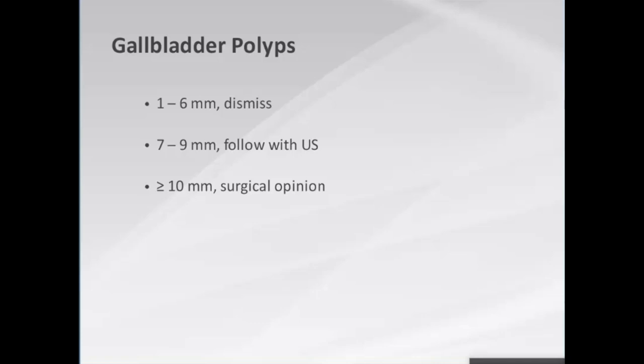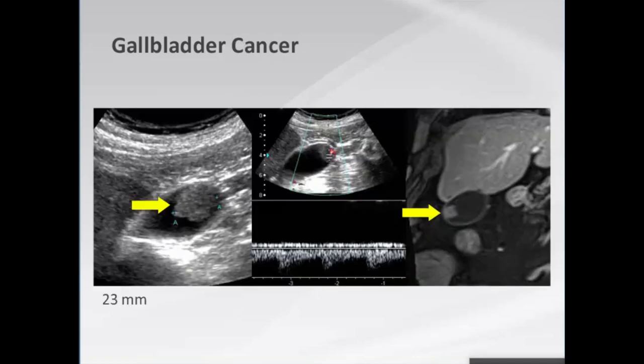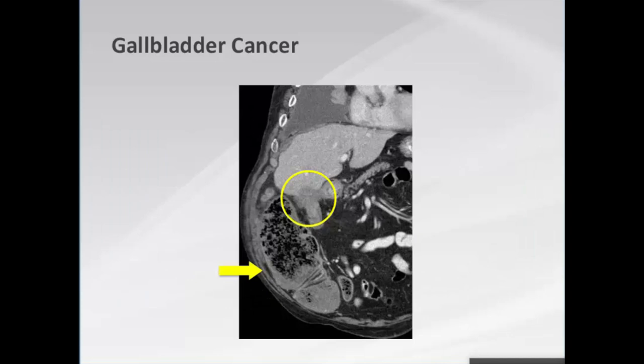Here's an example: a 2.3 centimeter polypoid gallbladder mass with spectral Doppler confirming it as a vascular mass. Strong concern about malignancy was raised. The patient either declined surgery or was lost to follow-up, and returned with obstruction of the right colon from an invasive cancer involving the hepatic flexure, with likely tumor seeding in the paracolic gutter. You must have serious concern when you see larger polypoid gallbladder masses.